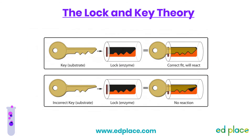This is called the lock and key theory. It works in a similar way to a lock and a key — a lock is designed to only work with a key that fits it perfectly. The key is like the substrate and the lock is like the enzyme's active site. The right key will unlock the lock; an incorrect key will not fit properly and won't unlock it. Similarly, an incorrect shape substrate will not fit correctly into the active site and therefore a reaction will not happen. The lock and key theory is important to remember for exams — it means the substrate has a complementary shape to the active site, making enzymes specific.